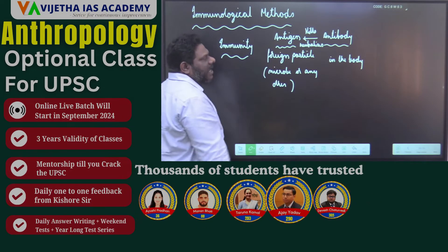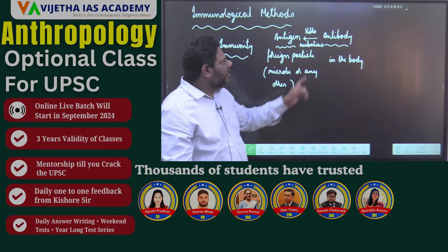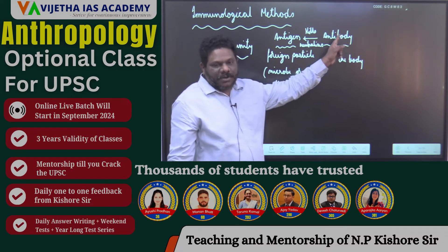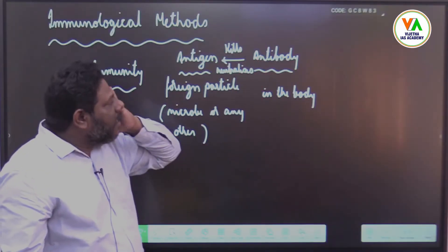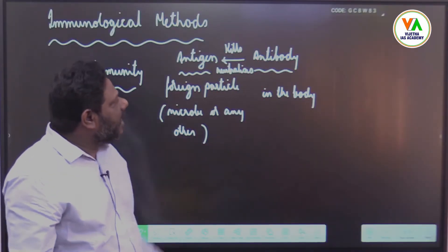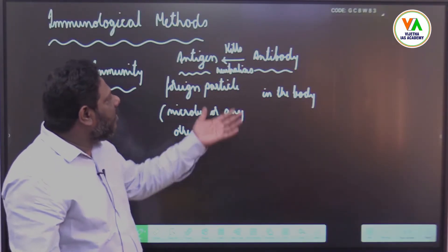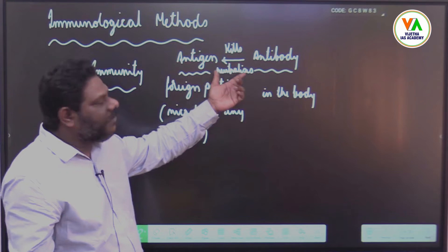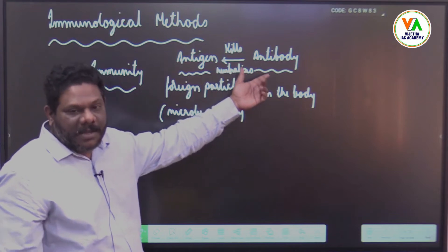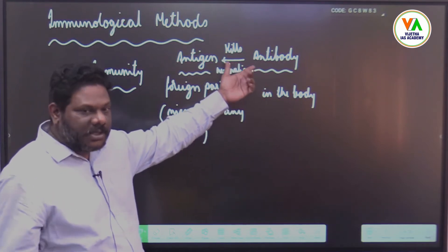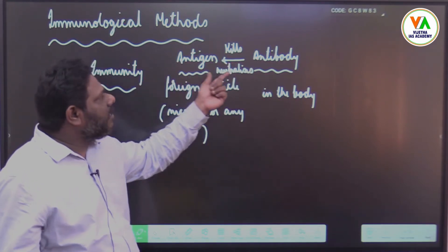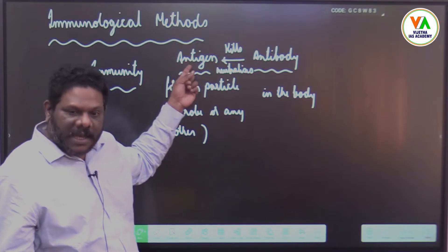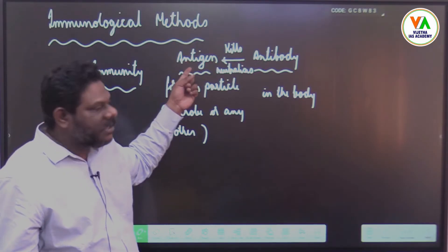That means if there is an antigen in the body, definitely an antibody is produced. The body takes some time. Once the antibody is already formed, it will produce very quickly, but for the first time it will take some time. Immunity is nothing but the body's response towards an antigen.